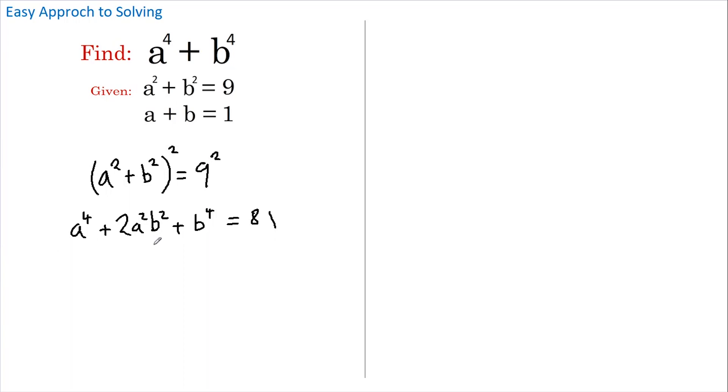Now if we take 2 a squared b squared across to the other side, we're left with a to the 4 plus b to the 4 equals 81 minus 2 a squared b squared.